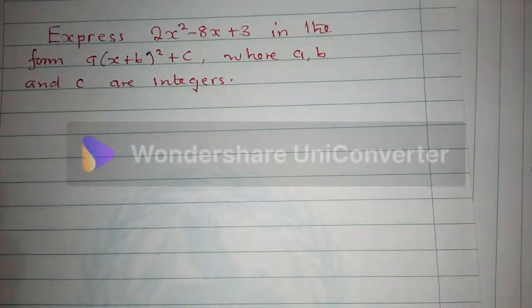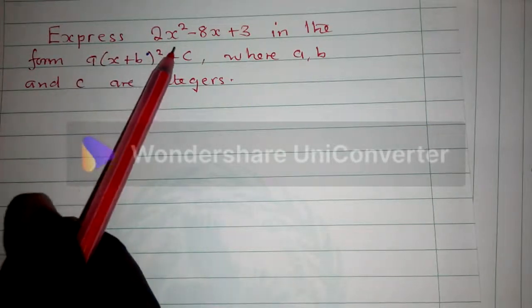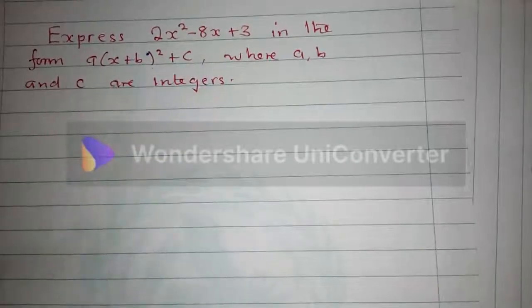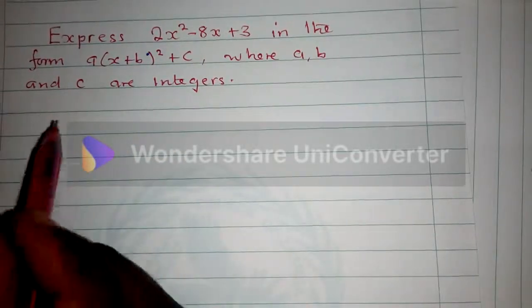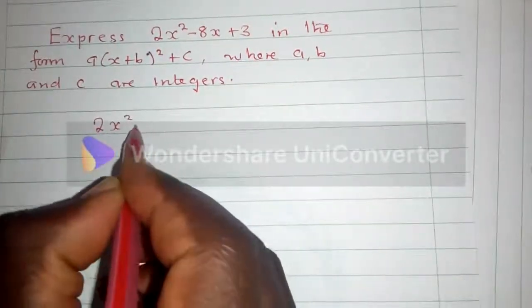Hi, welcome to my YouTube channel. I have an exam question here where we are asked to express this quadratic equation 2x² - 8x + 3 in the form a(x+b)² + c, where a, b, and c are integers. So this is what we do: you copy the equation.